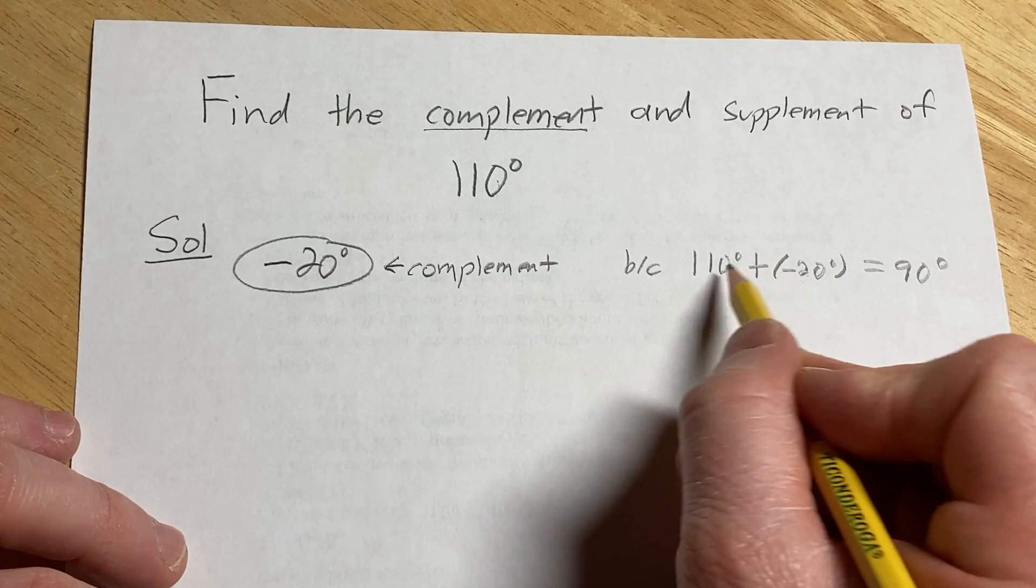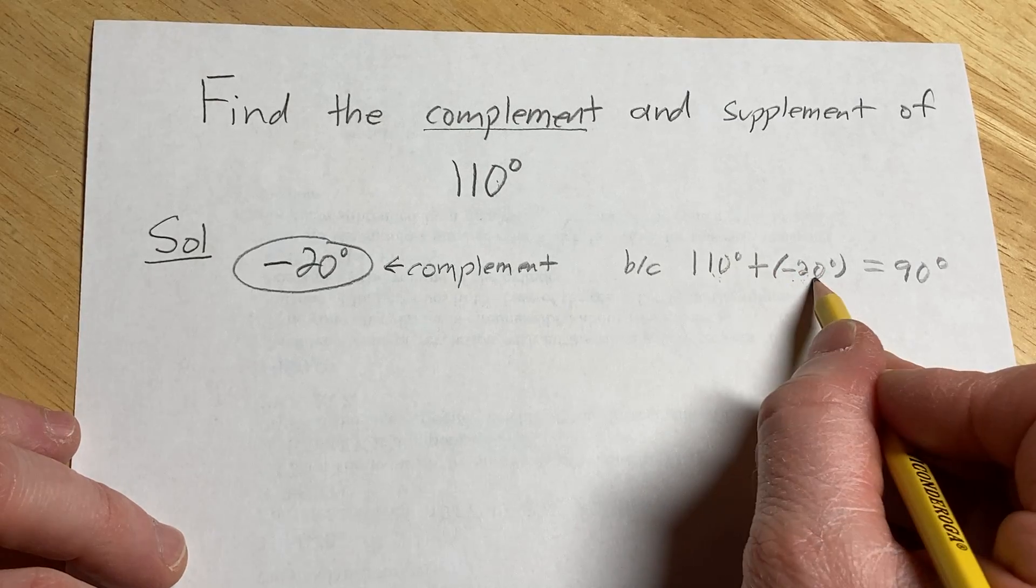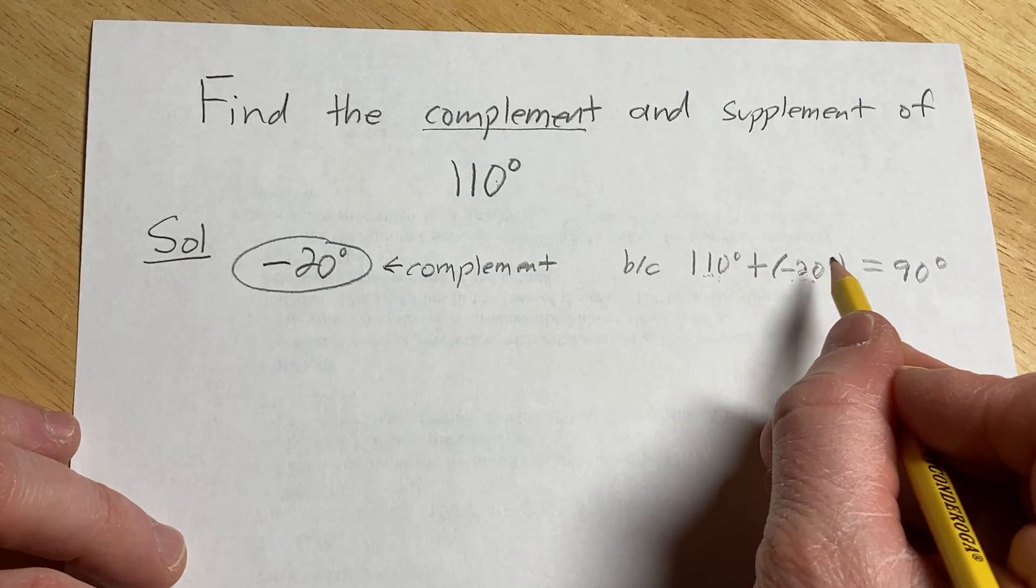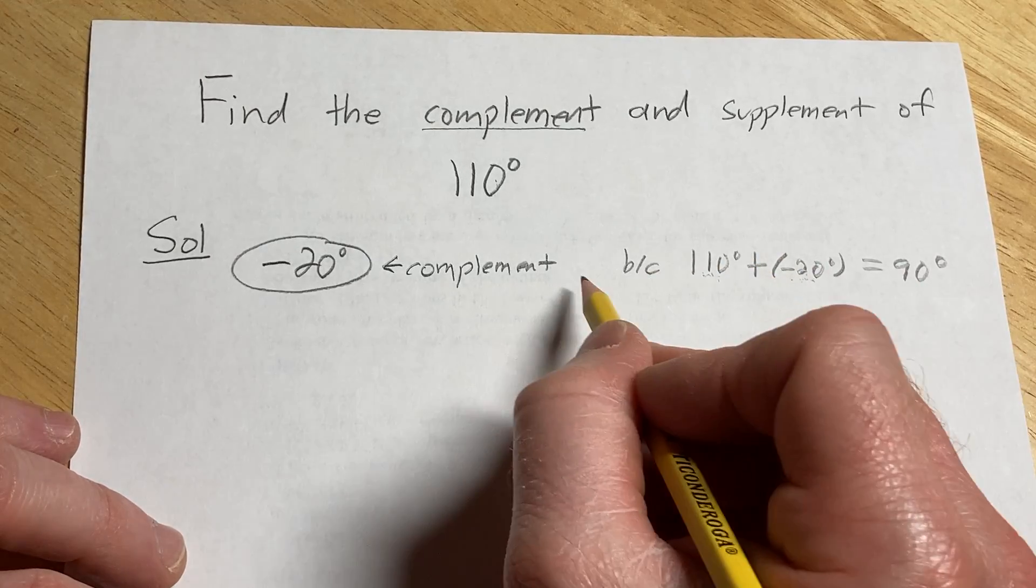It's an angle that when you add to it, you get 90. These angles are called complementary angles, and 110 is the complement of negative 20, and negative 20 is the complement of 110. That's because they add to 90 degrees.